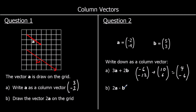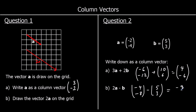And 2A minus B. So 2A would be negative 4, negative 8. And we're taking away a 5, 3. Going backwards along 5, 3 is the same as adding negative 5, negative 3. So negative 4 take away 5 is negative 9. And negative 8 take away 3 is negative 11.